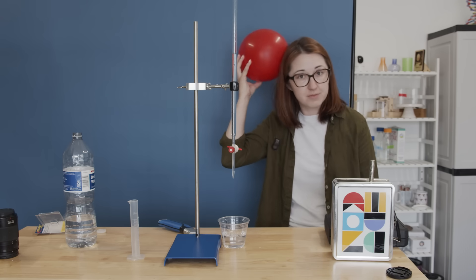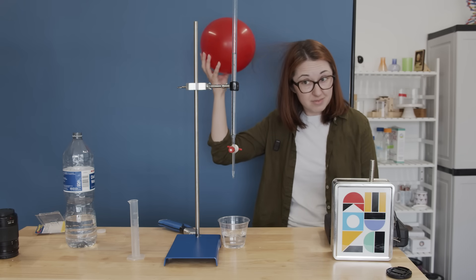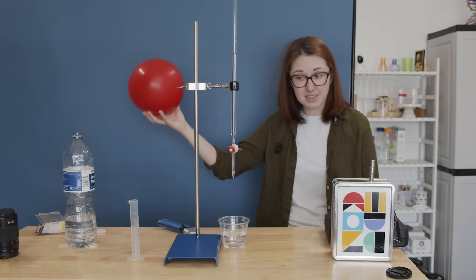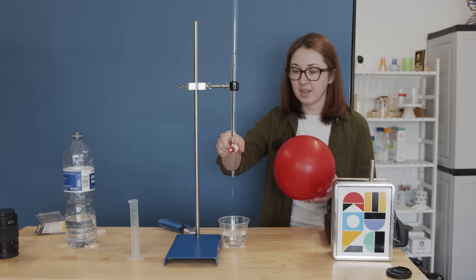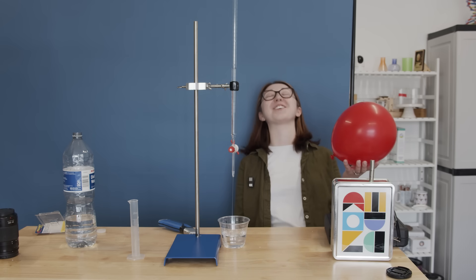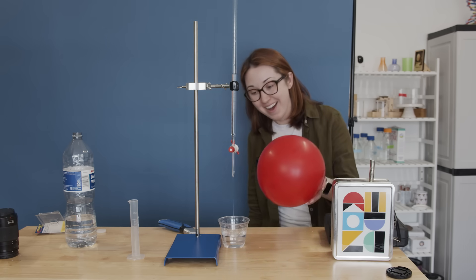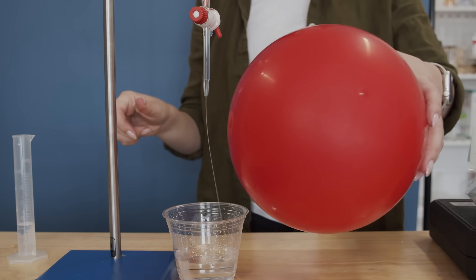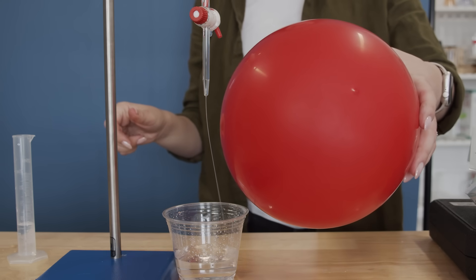Water molecules are polar with a slight positive charge on one end and a slight negative charge on the other end. So I can use that built up static electricity to move the stream of water. You can actually see the stream of water bend towards the balloon a little bit.